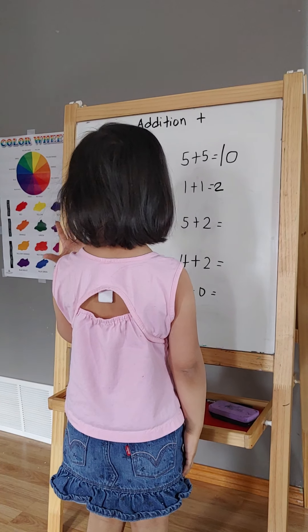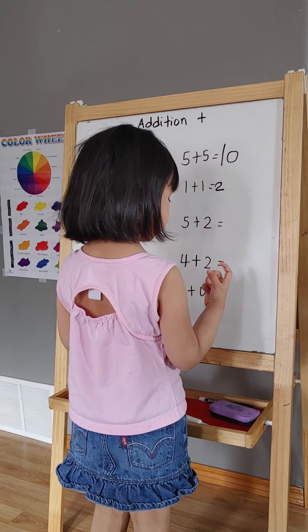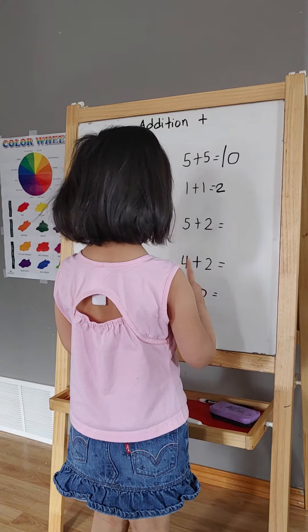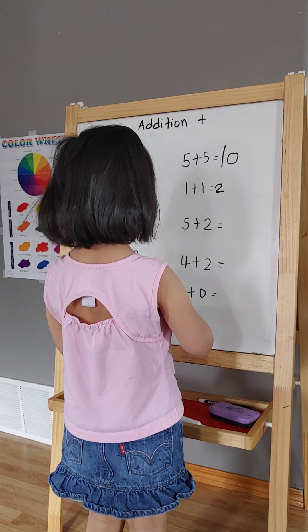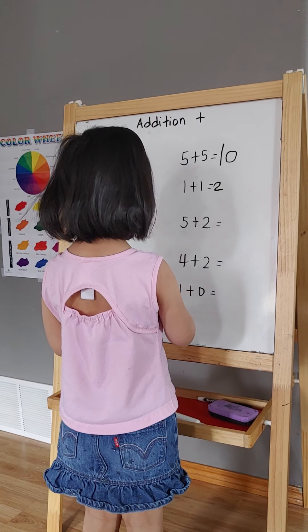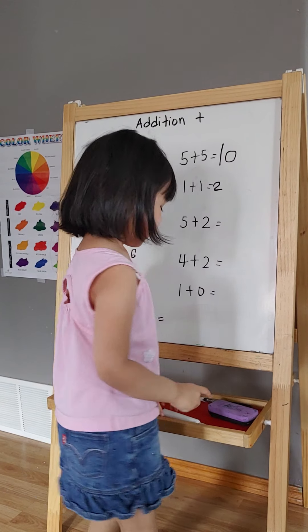5 plus. I'm not my finger and put 2 on my other finger. Count that. 1, 2, 3, 4, 5, 6, 7. 7.